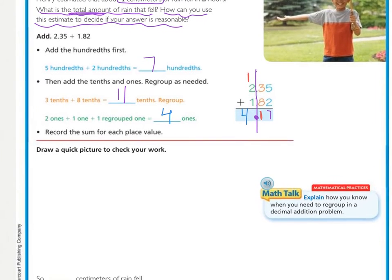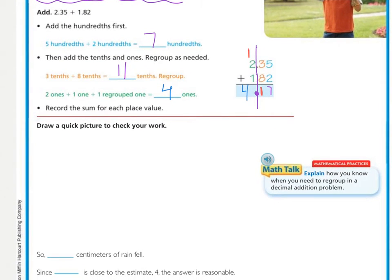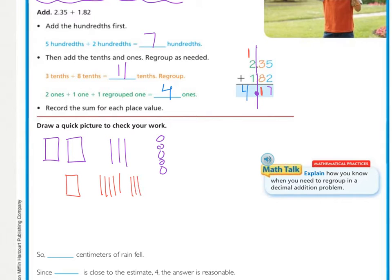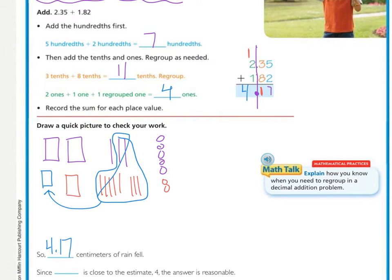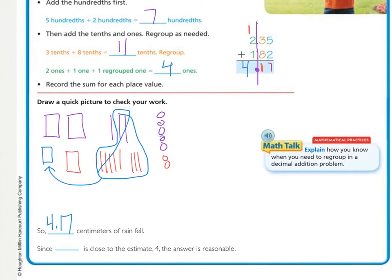Just for checking, we can draw a quick picture. We started with 2 ones and 35 hundredths, and then 1 and 82 hundredths, and regrouped those. My picture actually matches my work, so our actual answer is 4 and 17 hundredths centimeters of rain fell. If we rounded 4 and 17 hundredths, the 1 means we stay down at 4, and since 4 and 17 hundredths is close to the estimate of 4, the answer is reasonable — meaning it makes sense.